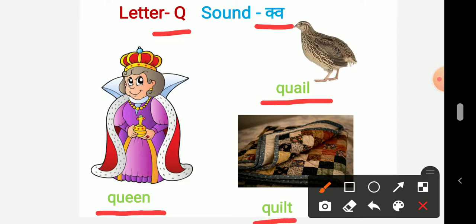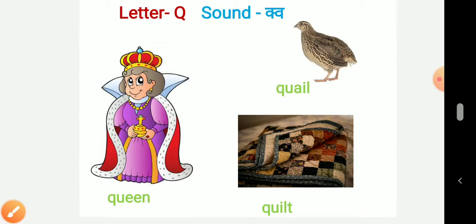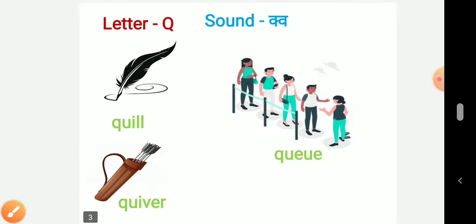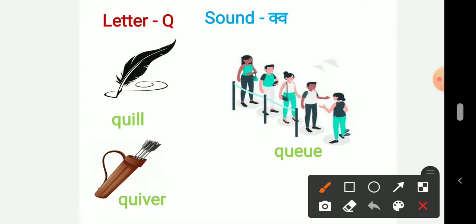The third picture is about Quilt. Q-U-I-L-T Quilt. So the starting sound is Quir. So here letter Q sound Quir.